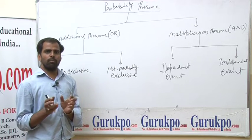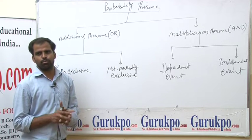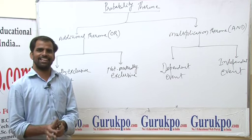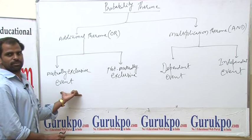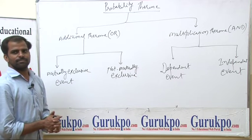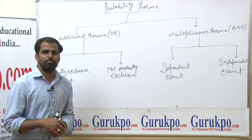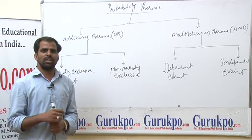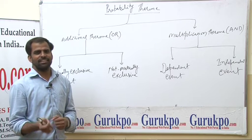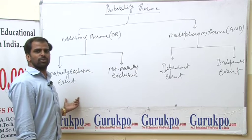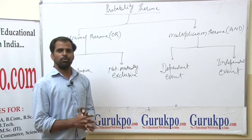Mutual exclusive events: when two or more events happen together but only one outcome occurs at a time. For example, when you toss a coin, either head or tail comes — only one result at a time. This means head and tail are mutual exclusive events.